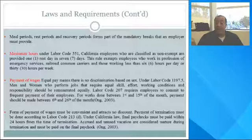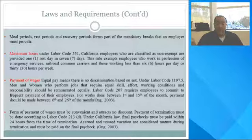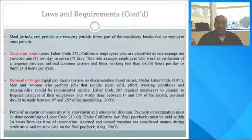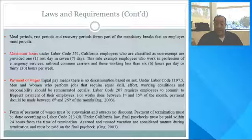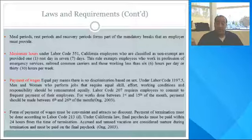Payment of wages: equal pay means there is no discrimination based on sex. Under Labor Code 1197.5, men and women who perform jobs requiring equal skill, effort, working conditions, and responsibilities should be remunerated equally. Labor Code 207 requires employers to pay employees frequently. For work done between the 1st and the 15th of the month, payment should be made between the 6th and the 26th day of the following month. The form of payment must be convenient and attract no discount. Payment upon termination must be done according to Labor Code 213D. Under California law, final paychecks must be paid within 24 hours from the time of termination. Accrued and unused vacations are considered earned wages upon termination and must be paid on the final paycheck.